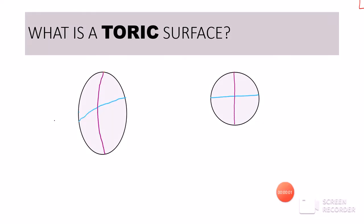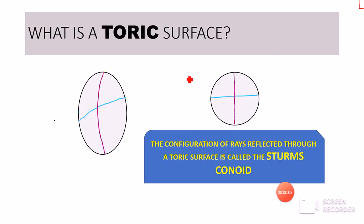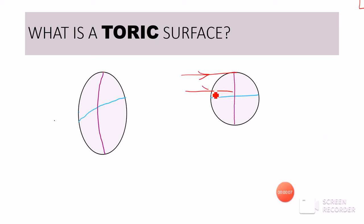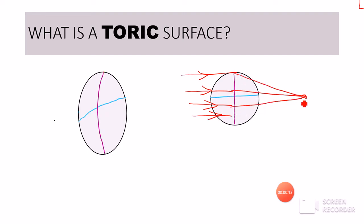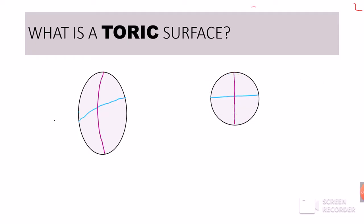When light rays pass through a perfect spherical surface, all the rays will actually come to a point focus, because the power of all the meridians is the same. They are all equally curved and therefore equally refract and bring the rays to a single focal point. This is called a point focus. However, the refraction of light rays is totally different in the case of a toric surface.